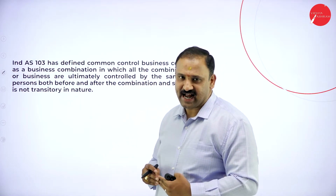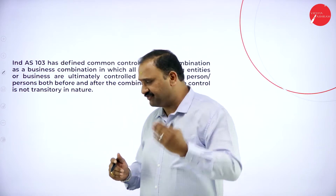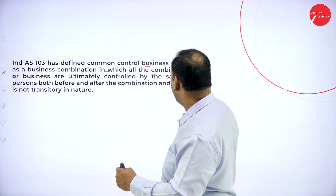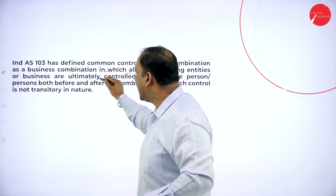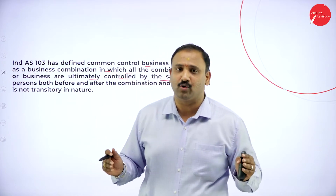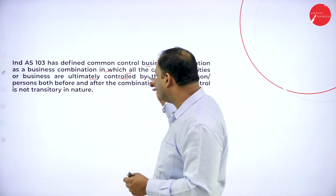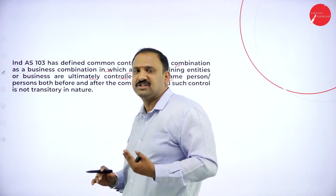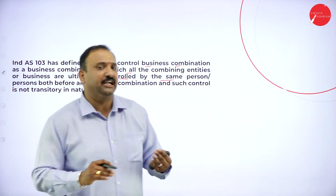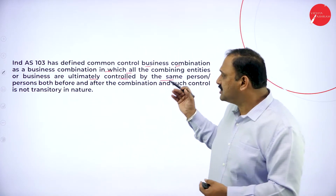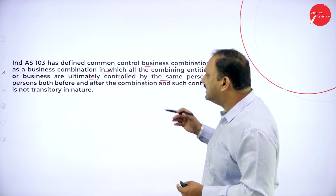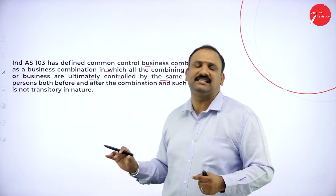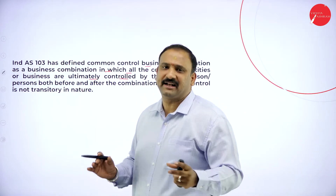Indian Accounting Standard 103 has defined common control business combination as a business combination in which all the combining entities or businesses are ultimately controlled by the same person, both before and after the combination. This control is not transitory in nature — it is not going to keep moving from one place to another. One person or one group holds the entire command altogether.